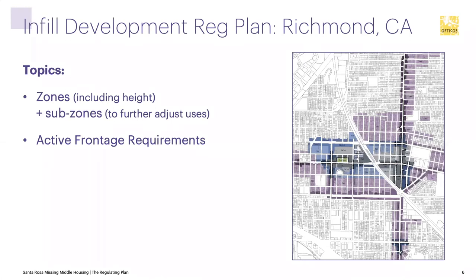In the Richmond example, we have a set of corridors and a downtown. The zones coordinate all the form, including more specific instructions shown as black dots along specific streets. Those dots indicate frontage requirements — implementing the need for active frontages with frequent pedestrian entries and large openings — those frontage elements like porches, stoops, shopfronts, and similar features, as opposed to blank facades.